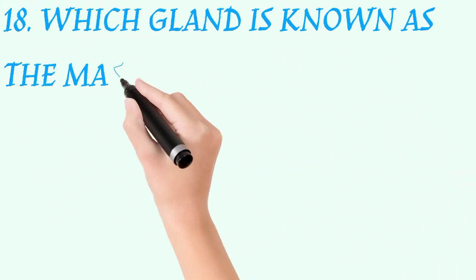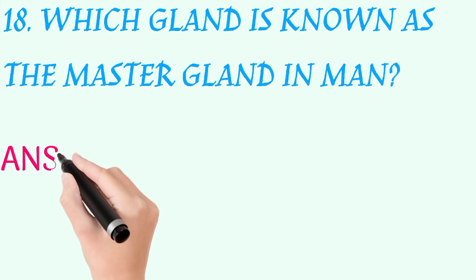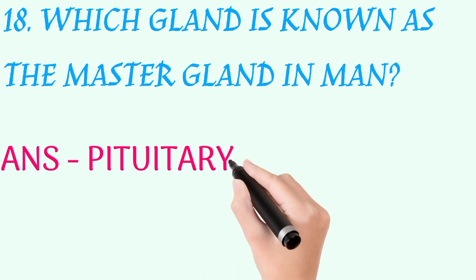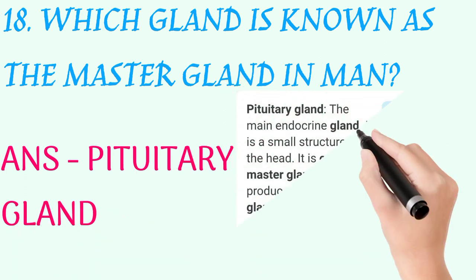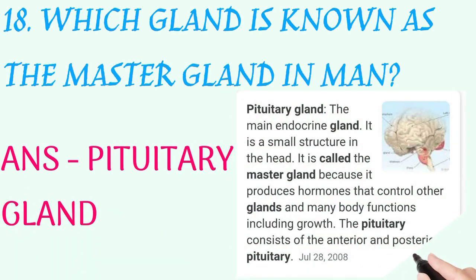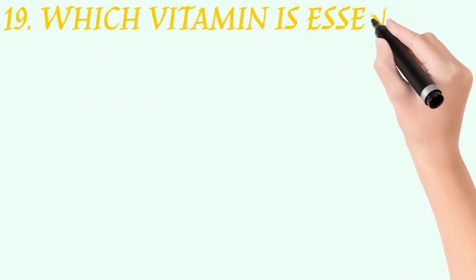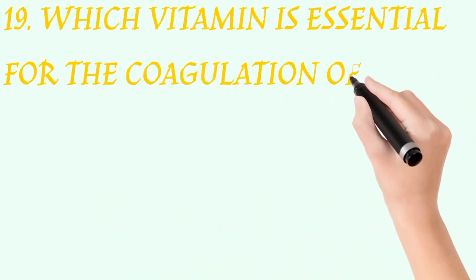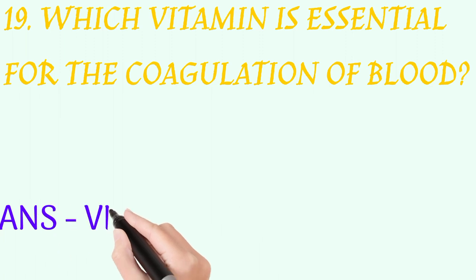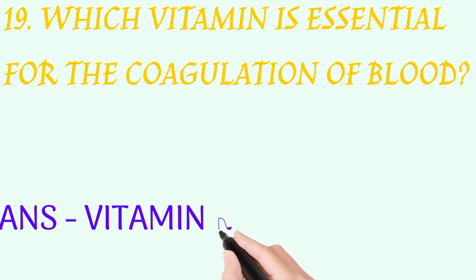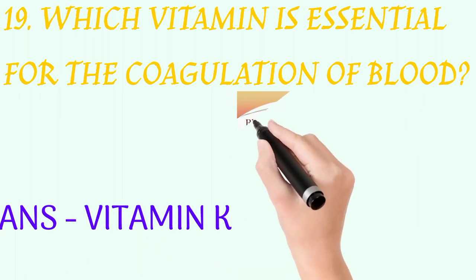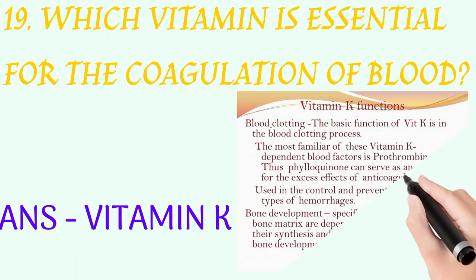Which gland is known as the master gland in man? Answer: pituitary gland. Which vitamin is essential for the coagulation of blood? Answer: vitamin K.